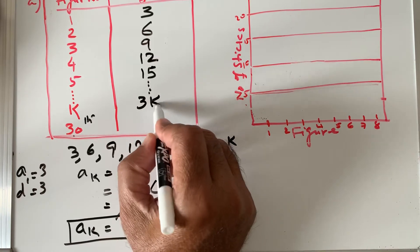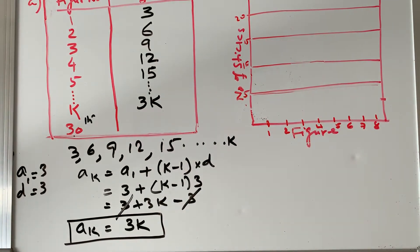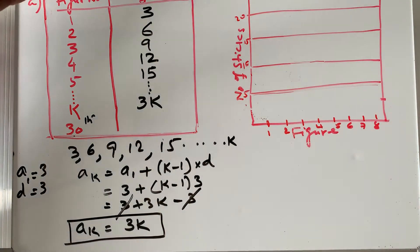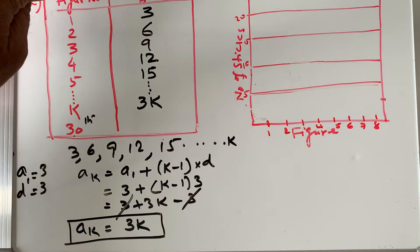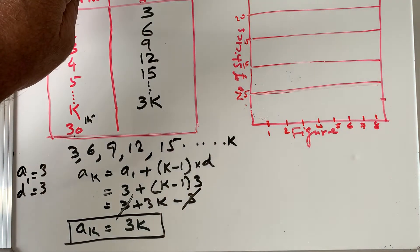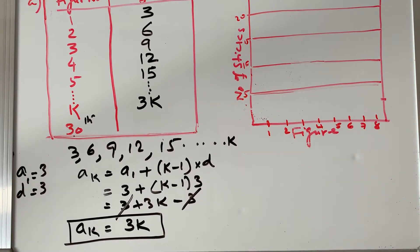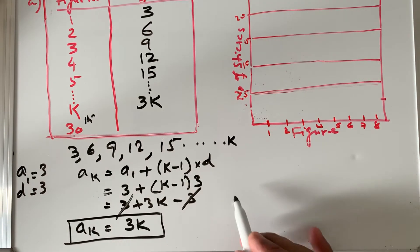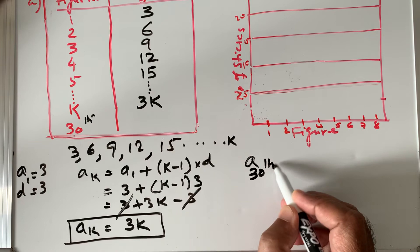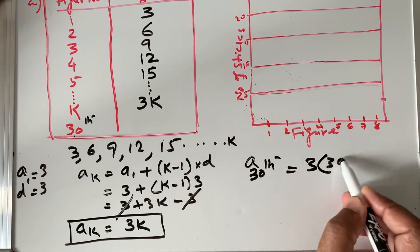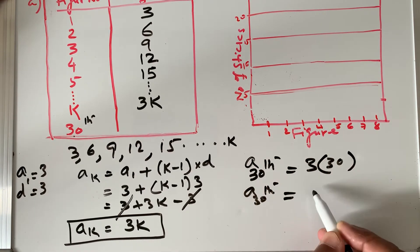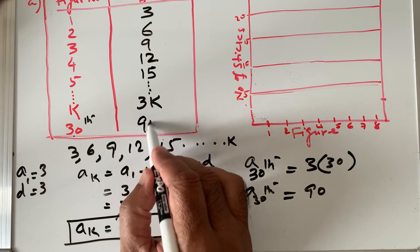So the kth term equals 3k — if you have the figure number, just multiply by three. Figure number 1: 3 times 1 is 3. Figure number 2: 3 times 2 is 6. Figure number 3: nine. Figure number 4: twelve — it goes up by three. To find the 30th term: 3 times 30 equals 90. So the 30th figure has 90 sticks, and the chart is filled in.